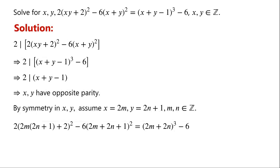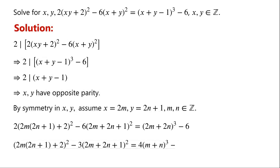2 times 2m times (2n plus 1) plus 2, all squared, minus 6 times (2m plus 2n plus 1), all squared, equals (2m plus 2n), all cubed, minus 6. As each term in the equation has a factor of 2, we divide the equation by 2, giving: 2m times (2n plus 1) plus 2, all squared, minus 3 times (2m plus 2n plus 1), all squared, equals 4 times (m plus n), all cubed, minus 3.